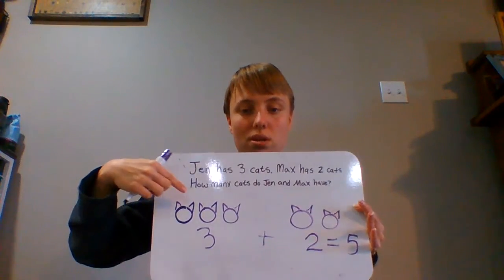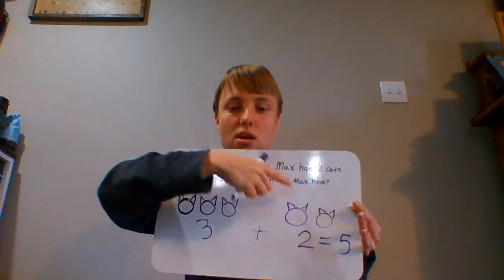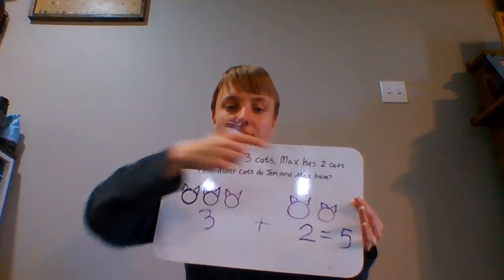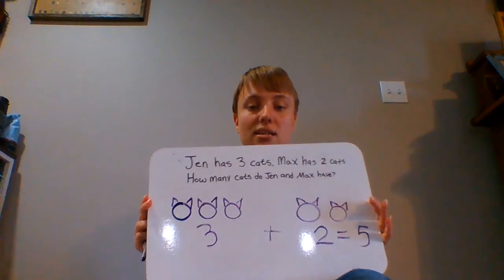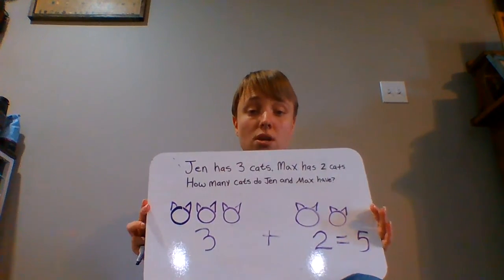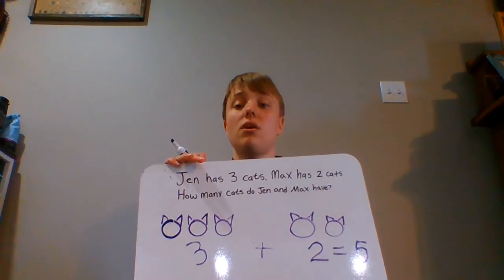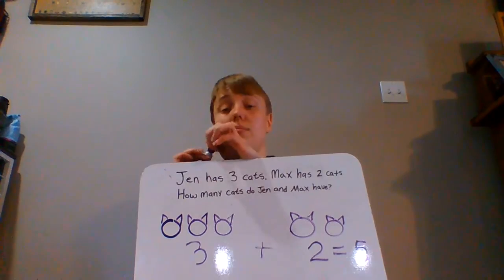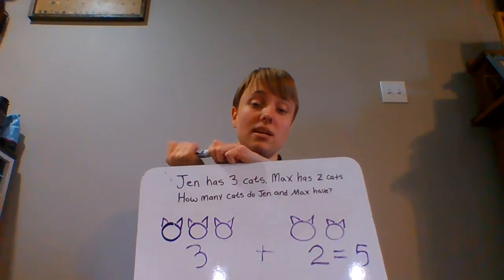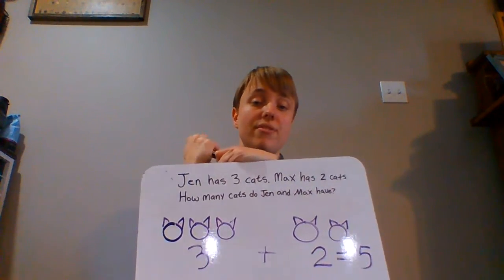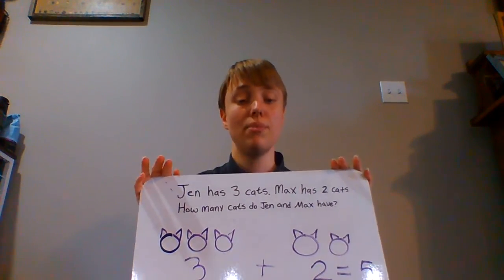And I can count that out: one, two, three, four, five. So I know that Jen has three cats plus Max's two cats equals five cats. For those of you that are starting out on basic addition problems, this is where you're going to start out this week — with this level of addition problem.